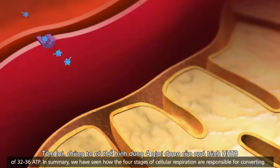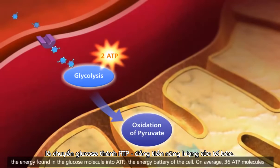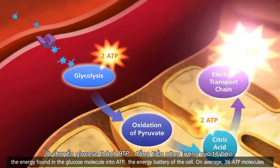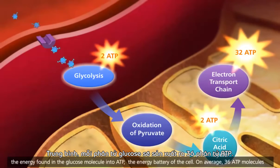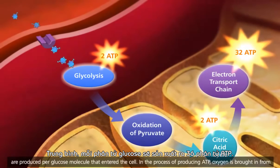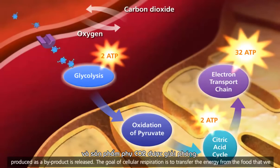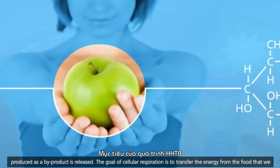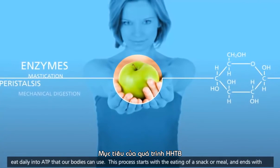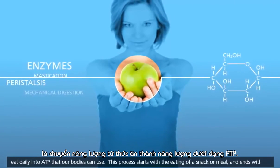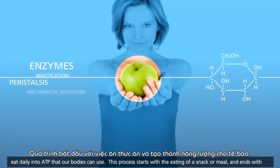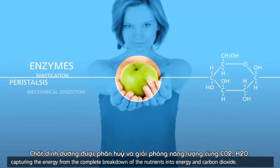In summary, we have seen how the four stages of cellular respiration are responsible for converting the energy found in the glucose molecule into ATP, the energy battery of the cell. On average, 36 ATP molecules are produced per glucose molecule that entered the cell. In the process of producing ATP, oxygen is brought in from the bloodstream to be the final electron acceptor in the electron transport chain, and the carbon dioxide that is produced as a byproduct is released. The goal of cellular respiration is to transfer the energy from the food that we eat daily into ATP that our bodies can use. This process starts with the eating of a snack or meal, and ends with capturing the energy from the complete breakdown of the nutrients into energy and carbon dioxide.